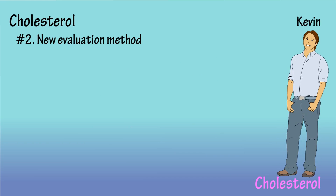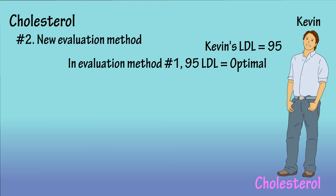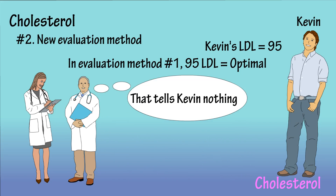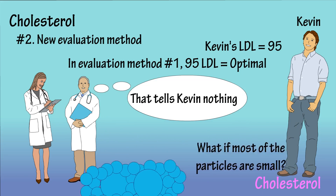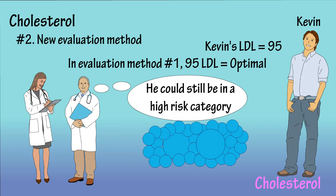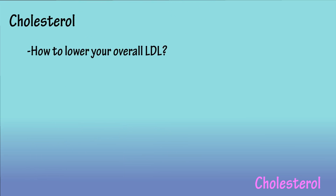Let's say that Kevin has a cholesterol test done. His LDL number comes in at 95, which according to method one would be termed optimal. Doctors and researchers who use method two would argue that 95 LDL tells Kevin nothing. They would say that if a vast majority of those LDL particles were small, Kevin could still be in a high risk category for developing heart disease because nothing is known about his LDL particle size. You can discuss with your doctor which cholesterol evaluation method is best for you. Based on the two different evaluation methods, there are three questions we need to look at: how to lower your overall LDL, how to increase your HDL, and how to increase LDL particle size.